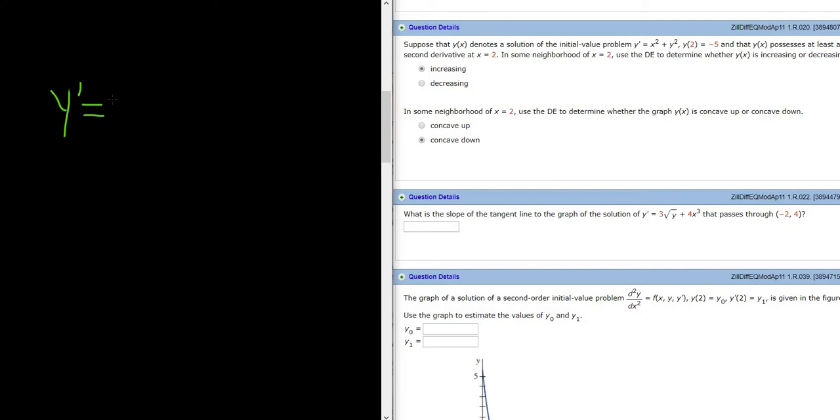We have a differential equation y' = 3√y + 4x³. We have to find the slope of the solution of this DE that passes through (-2, 4).